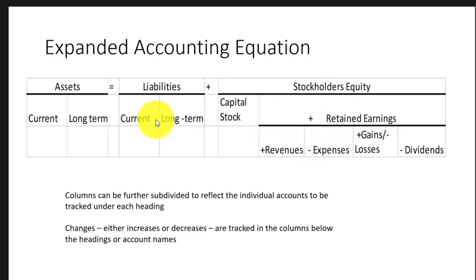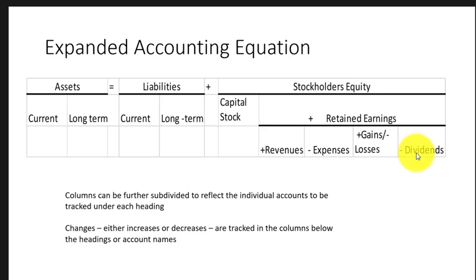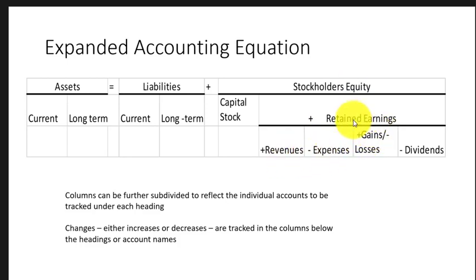Going back to our expanded accounting equation — notice that expenses are subtracted. So any additional expenses make retained earnings go down, any losses make retained earnings go down, and any payment of dividends makes retained earnings go down. Additional revenue makes retained earnings go up, and gains make retained earnings go up. If retained earnings goes up, stockholders' equity goes up.